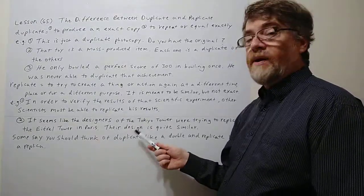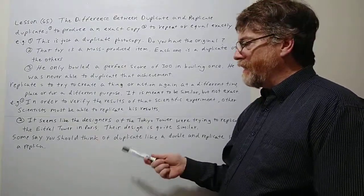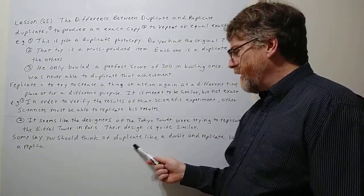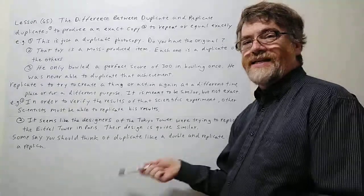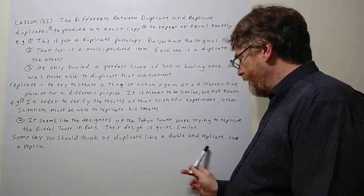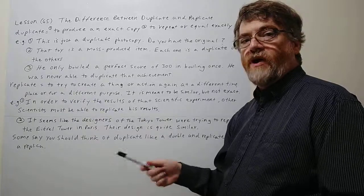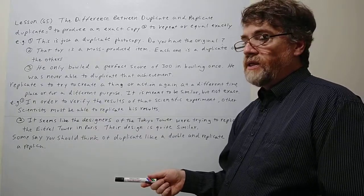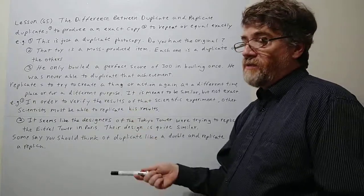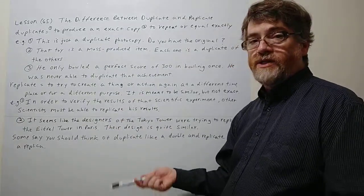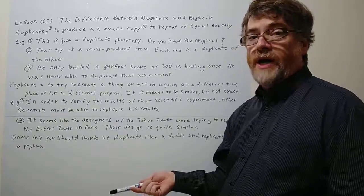So again you would use replicate here. Some people say that you should think of duplicate like a double - you try to make an exact double - and replicate kind of like a replica. We often see replicas of artwork, and sometimes the original one could be life-size but maybe the replica might be half the size or might be like a little statue that's sold in a souvenir shop.